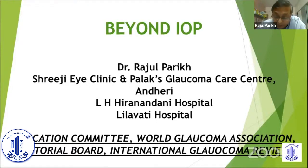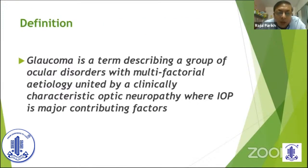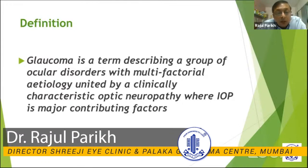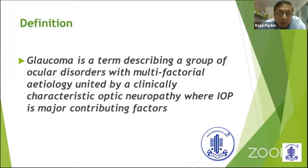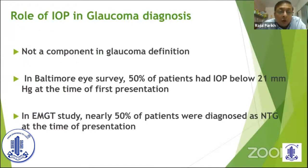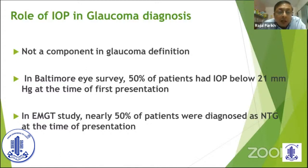My talk is Glaucoma Diagnosis Beyond IOP. If you know the definition of glaucoma, it's a group of ocular disorders with multifactorial etiology and by definition they have characteristic optic disc changes with corresponding visual field effects where IOP is the major contributing factor. We must remember that IOP is not a part of the glaucoma definition. If you look at various population-based studies and RCTs like EMGT, nearly 50% of patients had IOP less than 21 either at the time of diagnosis or at the time of enrollment in the study.